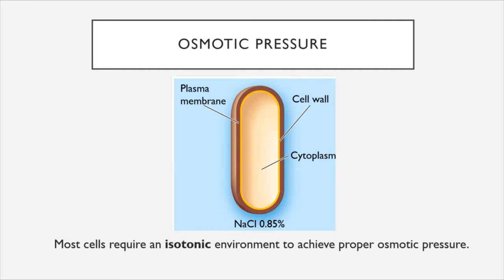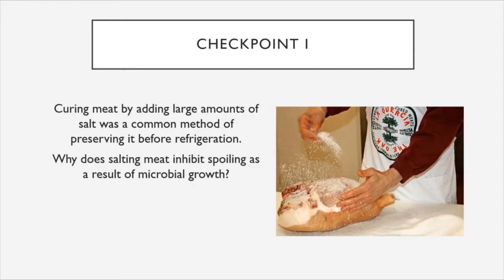Despite the protective effect of the cell wall, the ideal solution for most species of microbes is an isotonic one. Isotonic solutions, wherein there is no net movement of water via osmosis, represent the proper osmotic pressure for most but not all species of microbes. This brings us to our first checkpoint: curing meat by adding large amounts of salt used to be a common method of preserving it before refrigeration. Knowing what you know about osmotic pressure, explain why salting meat inhibits spoiling as a result of microbial growth.